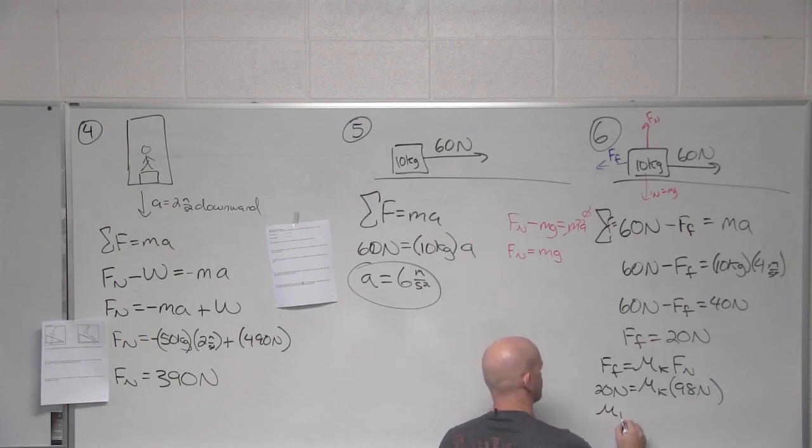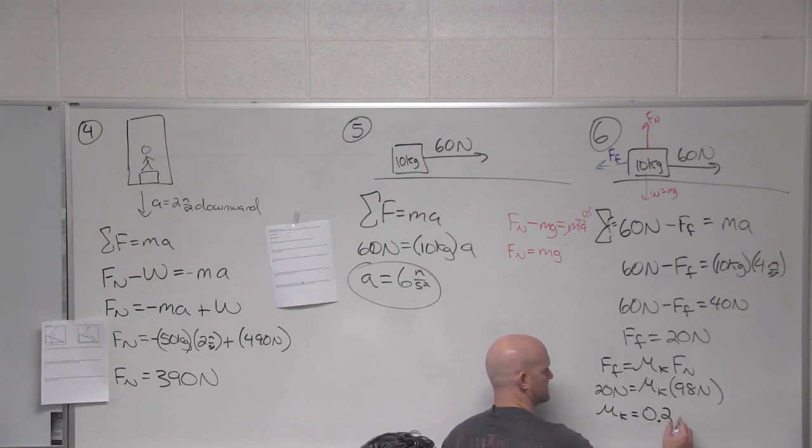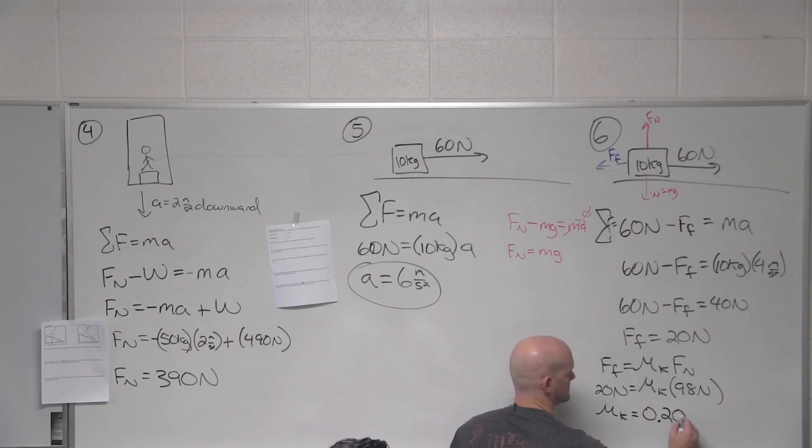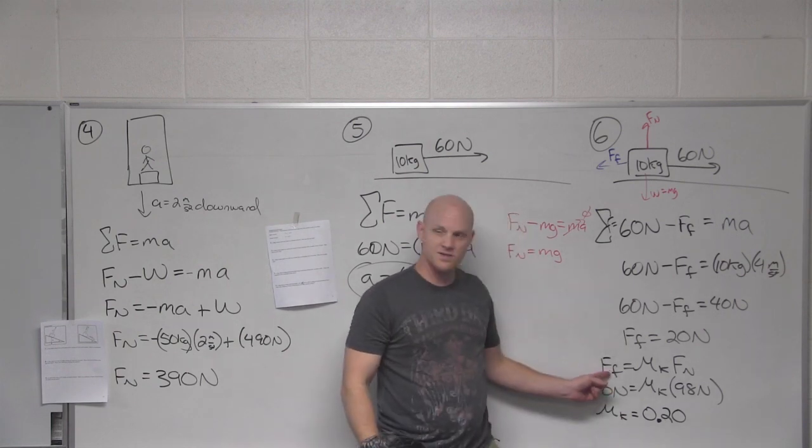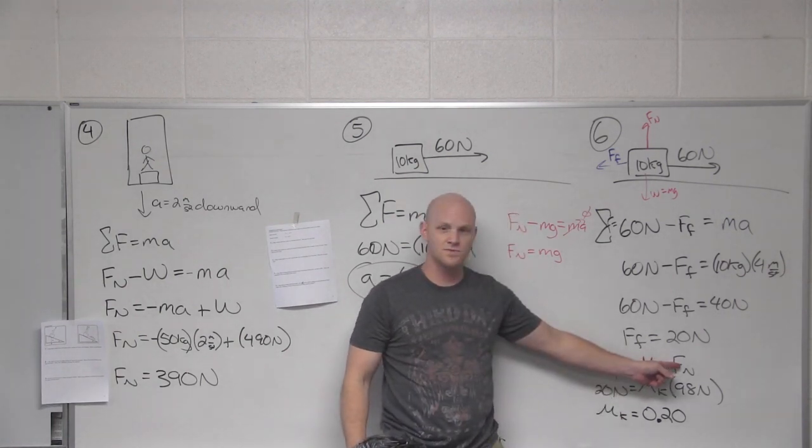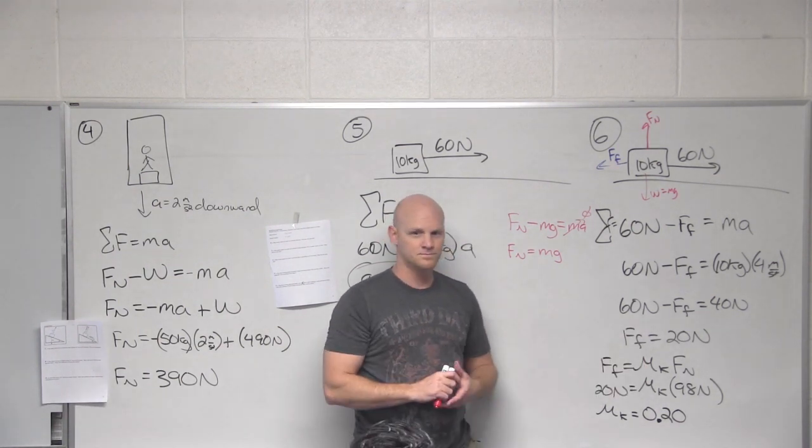And what do we get for a coefficient of kinetic friction? 0.20. And what are the units on that? It's not newtons. There's no units there. So if you notice, if force of friction has units of newtons and normal force is newtons, then your coefficient has no units whatsoever.